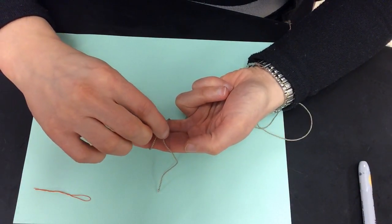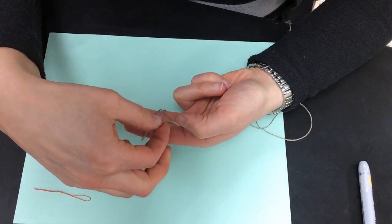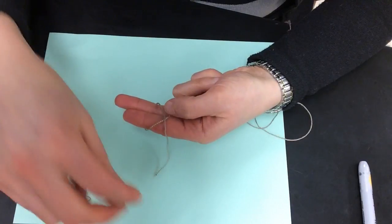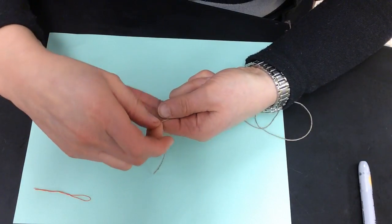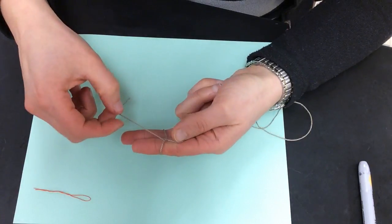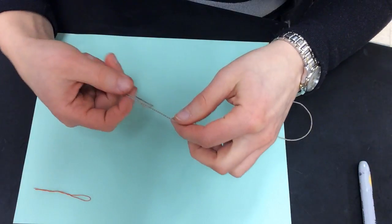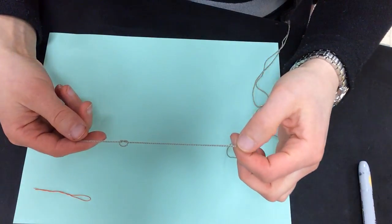Now what I want to do is tuck my end underneath the X. So I'm going to tuck it, bring it back through underneath the X and pull it through. And then what I do is slip my fingers out and pull this tight.